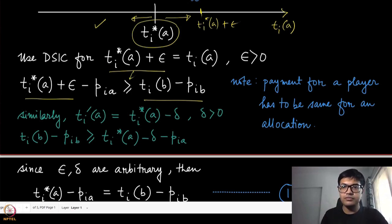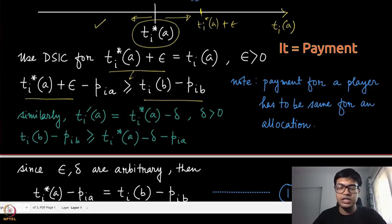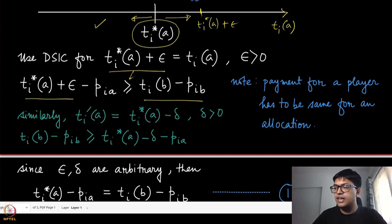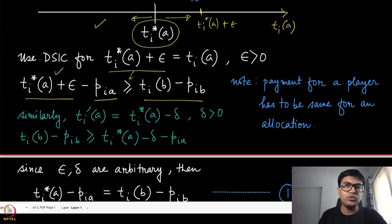For DSIC mechanisms, if changing your valuation report does not change the outcome, the payment should also remain the same. If the payment could change without the allocation changing, there would be a possibility of manipulation and the mechanism would never be DSIC. Therefore, the payment depends only on the outcome itself. This is one observation, and the DSIC inequality applies when the true type is slightly above t_i*(a) and the outcome is a.